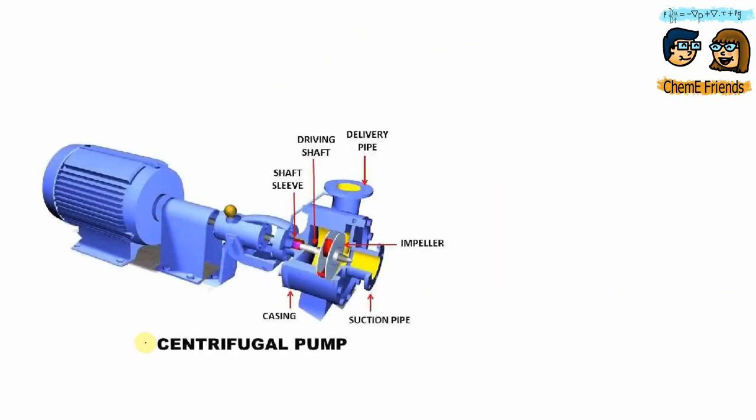A centrifugal pump is a hydraulic machine which is used to convert mechanical energy to hydraulic energy by the use of centrifugal force acting on the fluid. In simple terms, it is used to transfer a liquid from a low level to a high level.